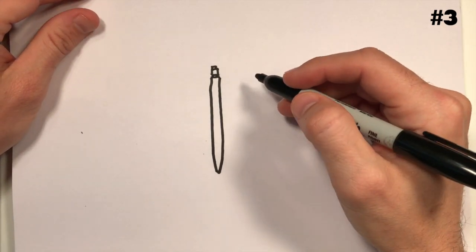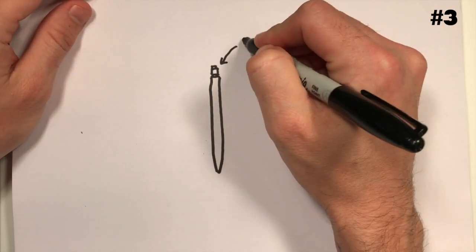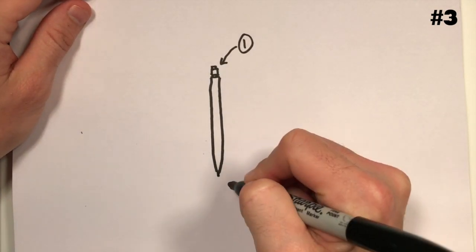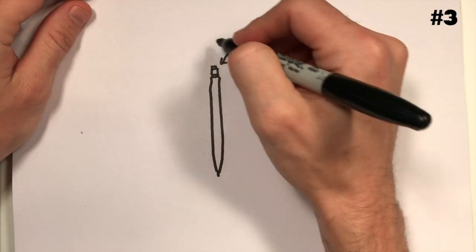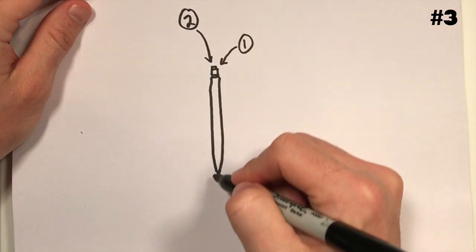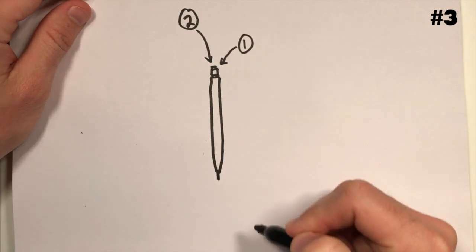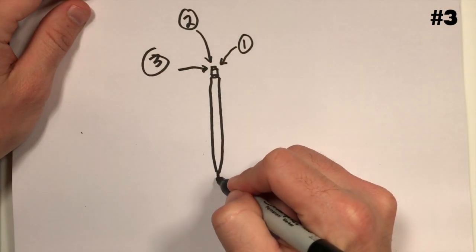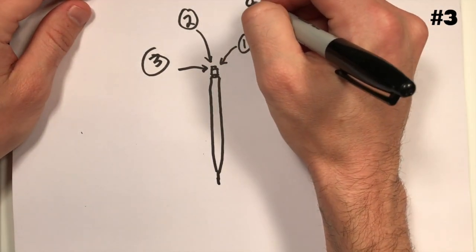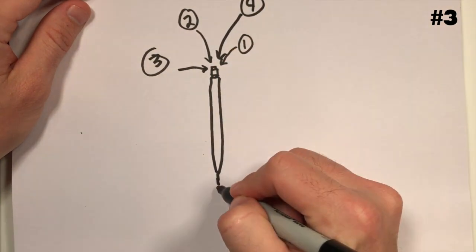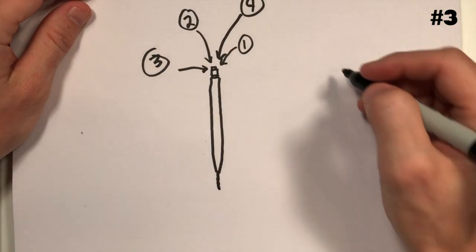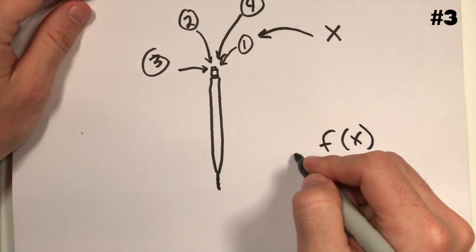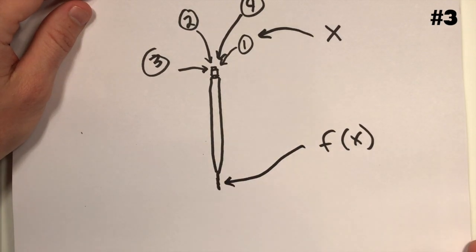Here we've got a mechanical pencil. One click on the eraser top makes the lead stick out one millimeter. A second click makes the lead stick out two millimeters. A third click makes the lead stick out three millimeters. A fourth click, four millimeters. If x is the number of clicks and f of x is the length of the lead.